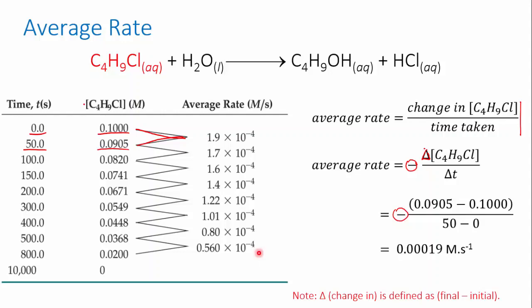We looked at the factors that affect reaction rate in the last video. One of them was concentration. As the reaction proceeds, the concentration of the reactant decreases because it's being used up. That means that the overall reaction rate is decreasing as well.